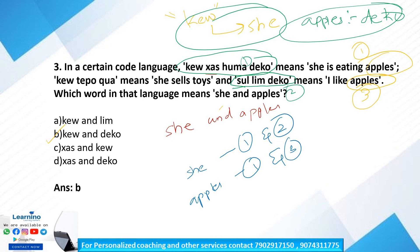To summarize: to find the code for a word, consider sentences that commonly have that word. The corresponding code languages will share the common code word. Next, question number 4.